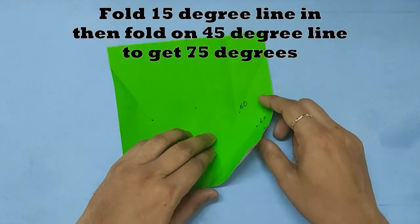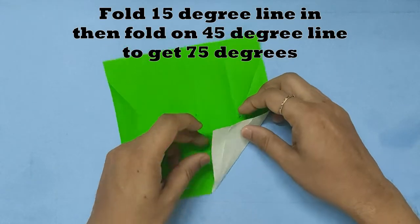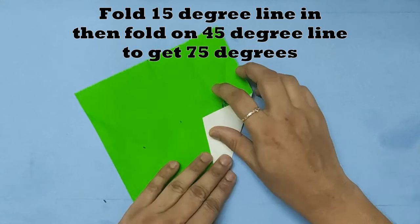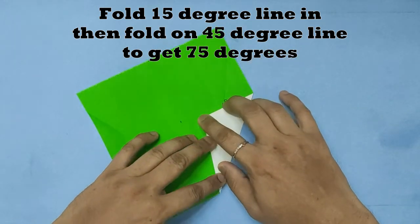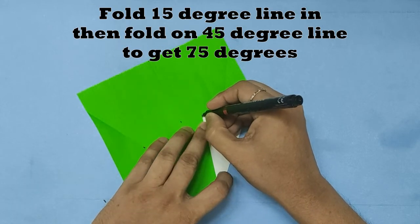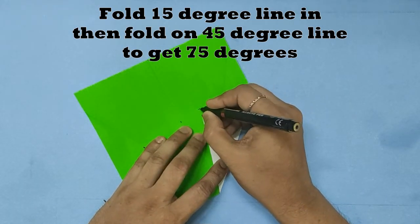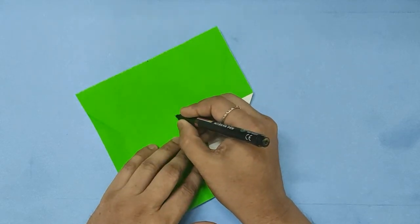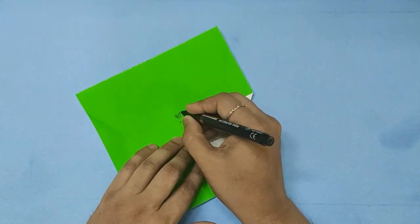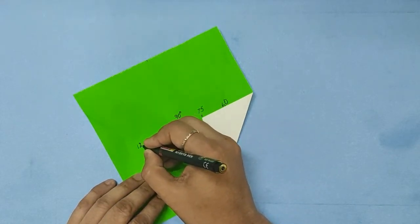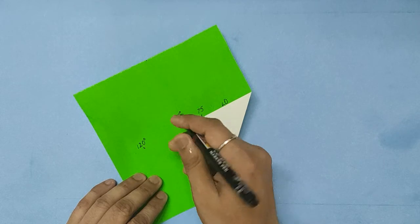Now we fold the 15 degree part and align it along the 45 degree to get 75 degrees. That point is 75 degrees, and that's 90 degrees. In the same way you can do the other side.